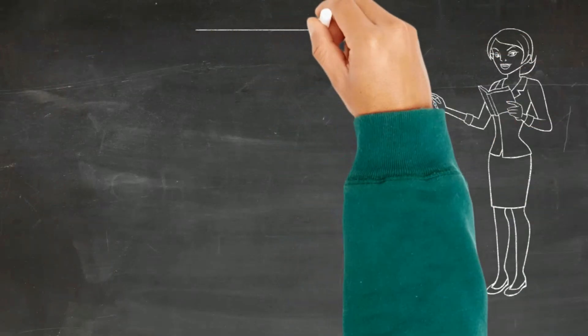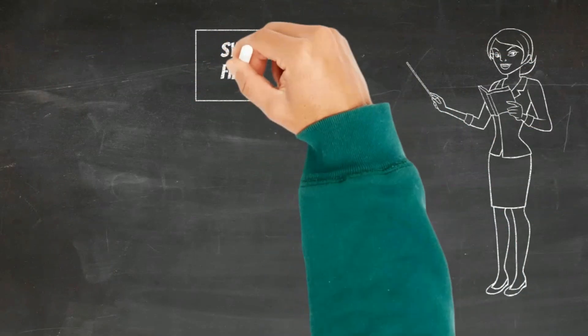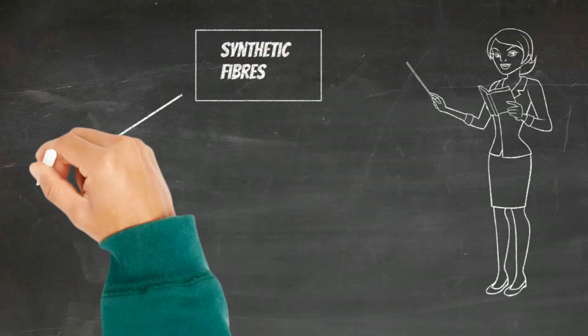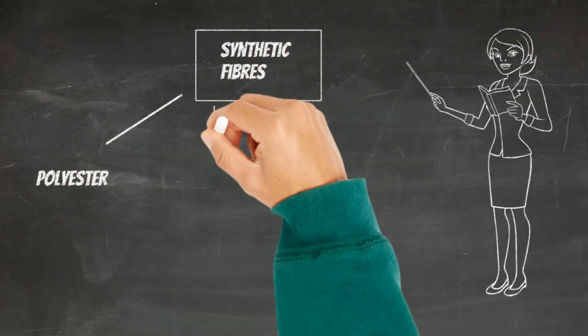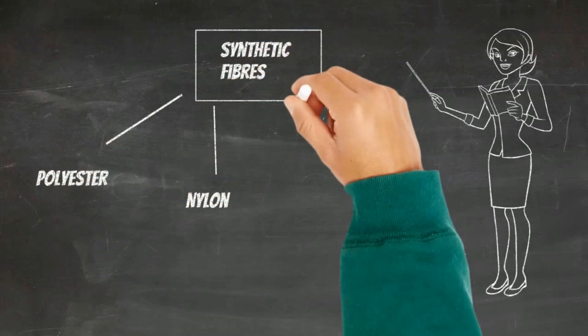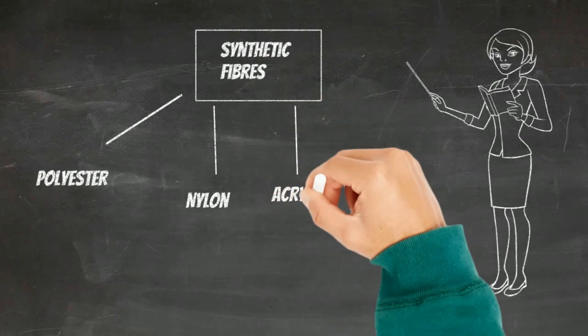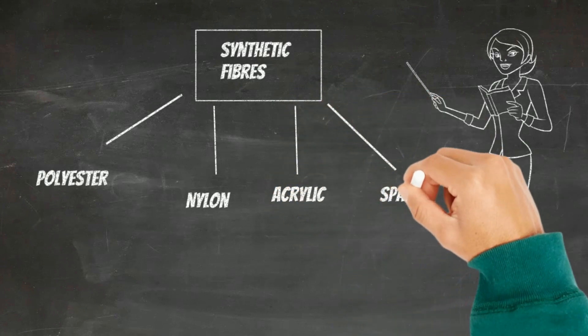Now let us discuss synthetic fibers. Examples of synthetic fibers are polyester, nylon, acrylic, and spandex.